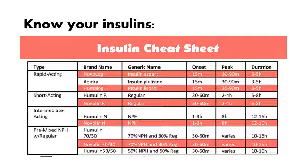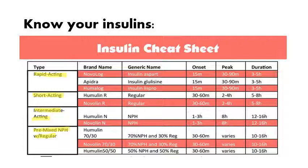Go back to your pharmacology or fundamentals books to review insulin names. You should recognize that Novolog or Humalog are rapid-acting; Lispro or regular insulin are short-acting; NPH, Humulin N, or Novalin are intermediate-acting; Humulin 70/30 or 70% NPH and 30% regular is a pre-mixed insulin. There are also long-acting insulins. Know the different names.